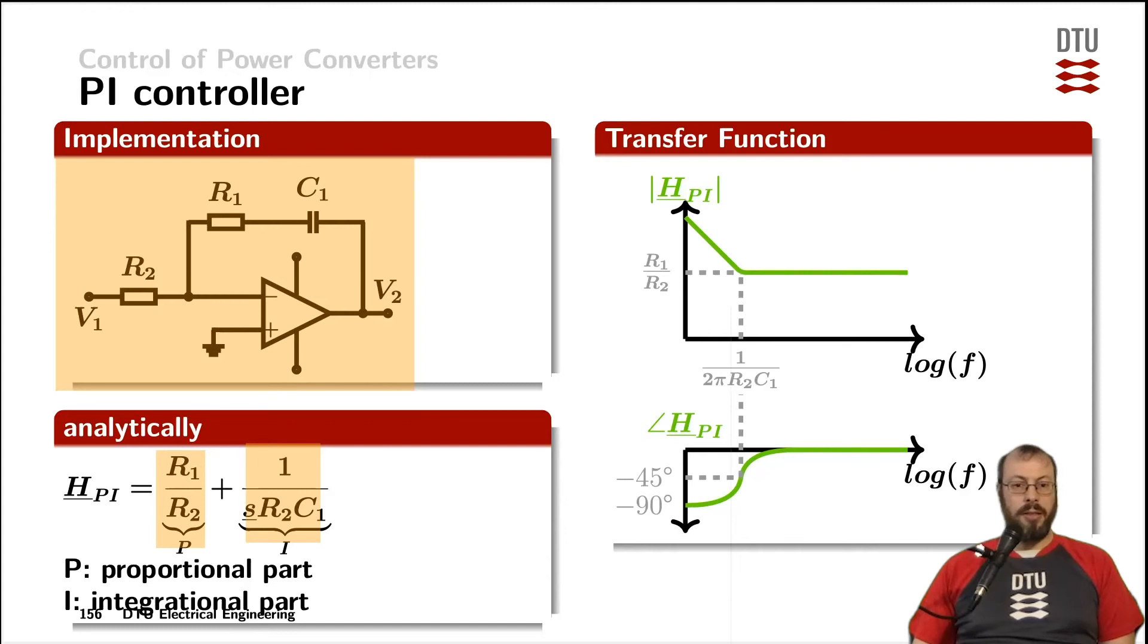Now the desired part of the Bode plot is as much as possible gain towards the low frequencies to correct for the errors.